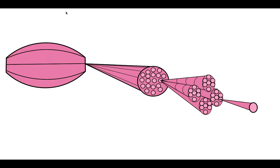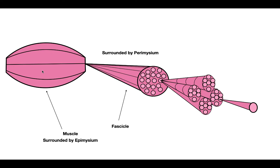I'd like to start off by first talking about the organization of skeletal muscle. Skeletal muscle is striated muscle and is going to be very highly organized. The first level of organization is going to be the muscle itself, surrounded by the epimysium — a protective sheath that surrounds the skeletal muscle. Each skeletal muscle consists of multiple bundles called fascicles, which are surrounded by perimysium.